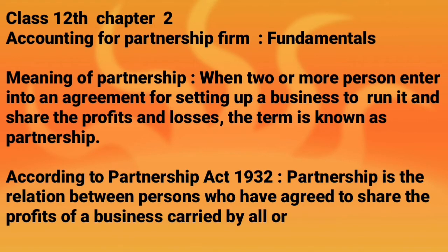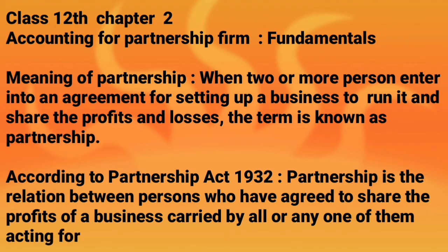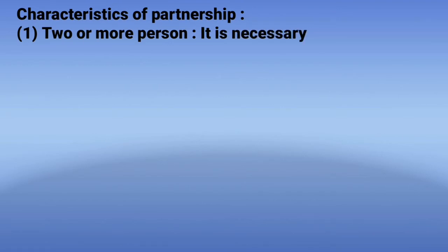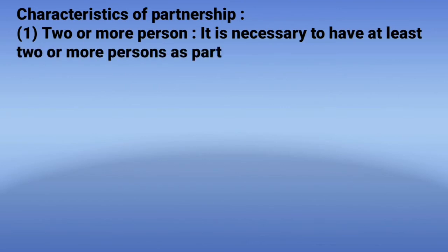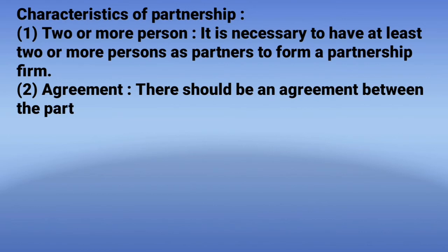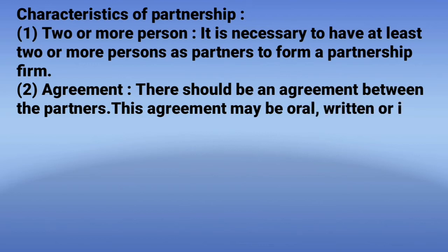Characteristics of Partnership. Number one: Two or more persons — it is necessary to have at least two or more persons as partners to form a partnership firm. Number two: Agreement — there should be an agreement between the partners; this agreement may be oral, written, or implied.